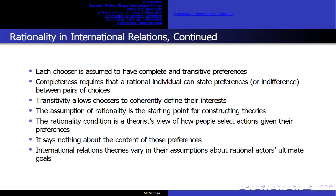Transitivity allows choosers to coherently define their interests. For choices X, Y, and Z: if X is preferred to Y, and Y is preferred to Z, then X is preferred to Z. The assumption of rationality is a starting point for constructing theories. The rationality condition is a theorist's view of how people select actions given their preferences. It says nothing about the content of those preferences.